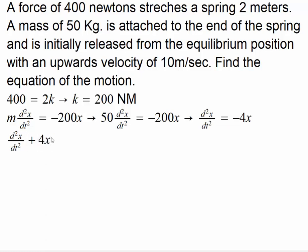In other words, we have d²x/dt² plus 4x equals 0. So the roots of our auxiliary equation are imaginary roots plus minus 2i. And then the equation of the motion is x(t) equals c₁cos(2t) plus c₂sin(2t).